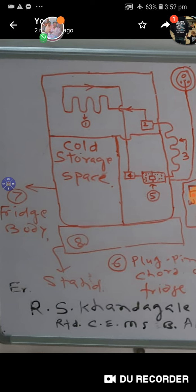In this cooling coil number 1, a cold gas is entered through expansion valve number 2. And when it enters in number 1, it gains the heat of material stored in cold storage space and gets heated. This cycle goes on and the material kept in cold storage space remains cool.